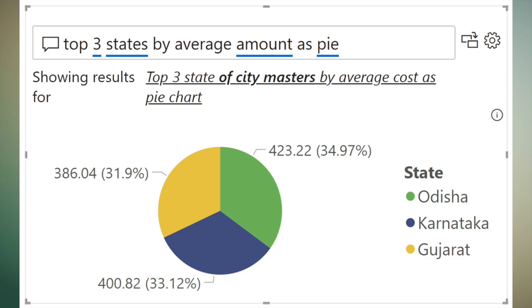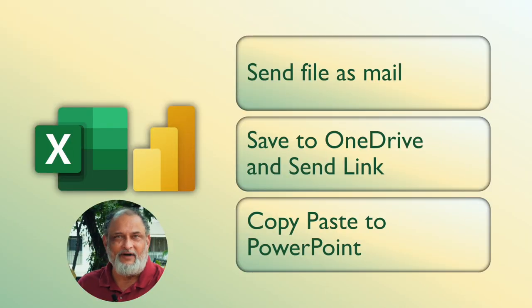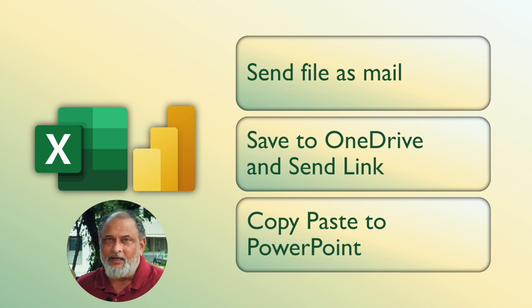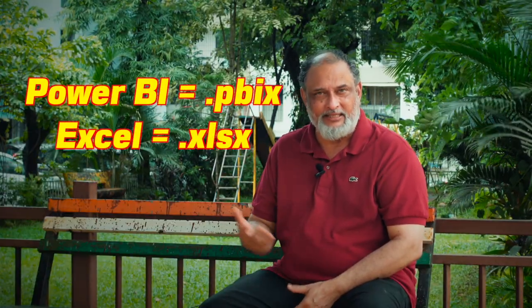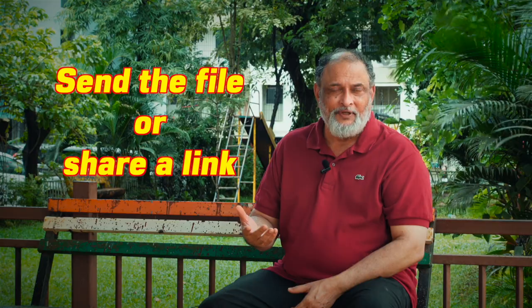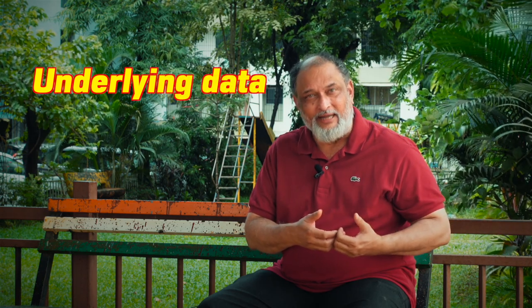Lastly, once the report is ready, the next step is to share it with other people. In Excel, we send the file as an attachment, or if you have a file on OneDrive or SharePoint, you can send a link. Whatever I've been showing in Power BI is the free version called Power BI Desktop — you can just download and use it for life, it is completely free. The file it creates is called a .pbix file, like .xlsx. You can share the report by sending the file or sharing a link, but the problem in either case is that people can see your underlying data and manipulate it.